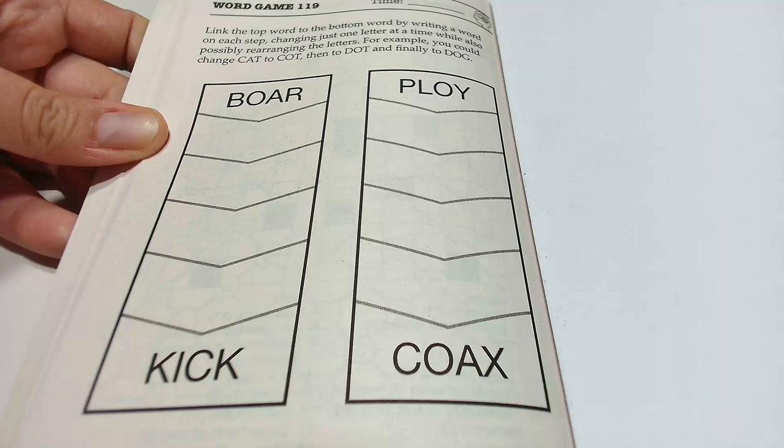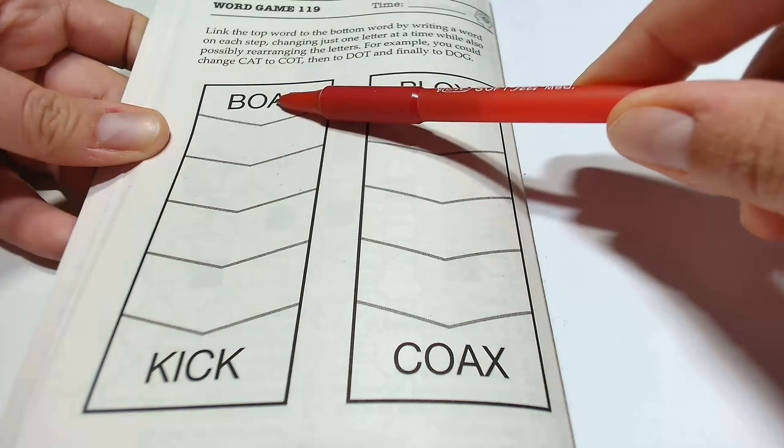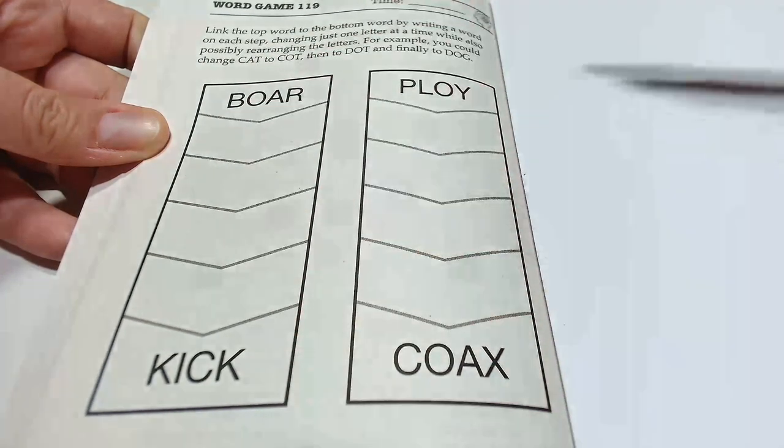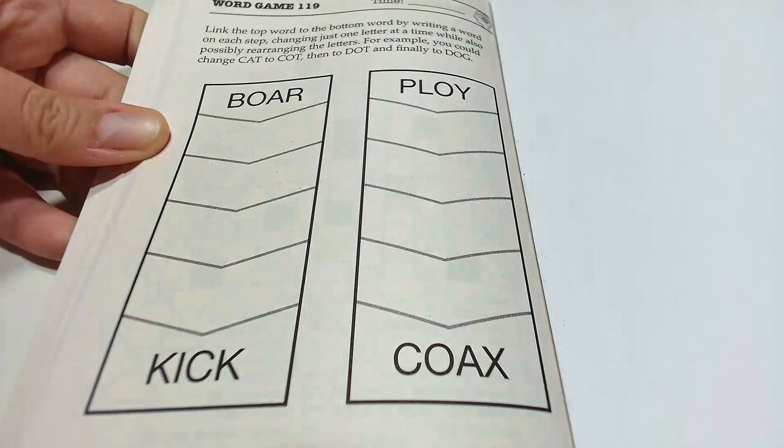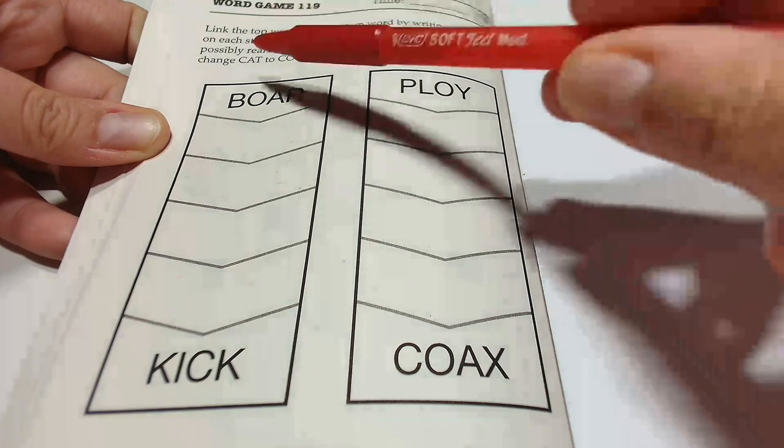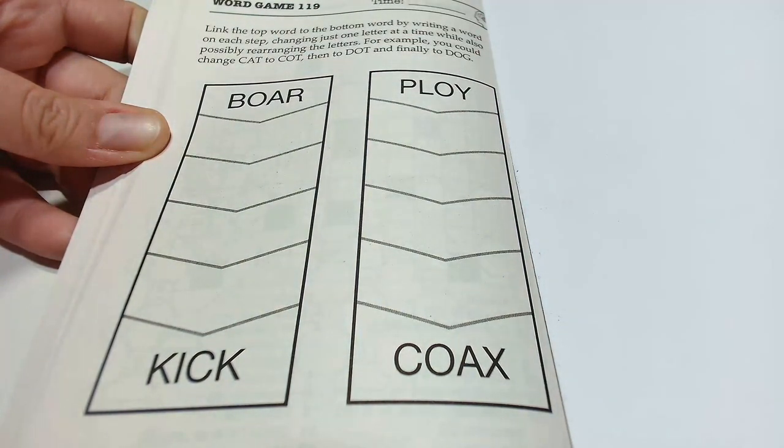Welcome to Word Games! Brain your day today as well. Are you ready for a new challenge? Link the top word to the bottom word by writing a word on each step, changing just one letter at a time while also possibly rearranging the letters. For example, you could change CAT to COT, then to DOT, and finally to DOG.